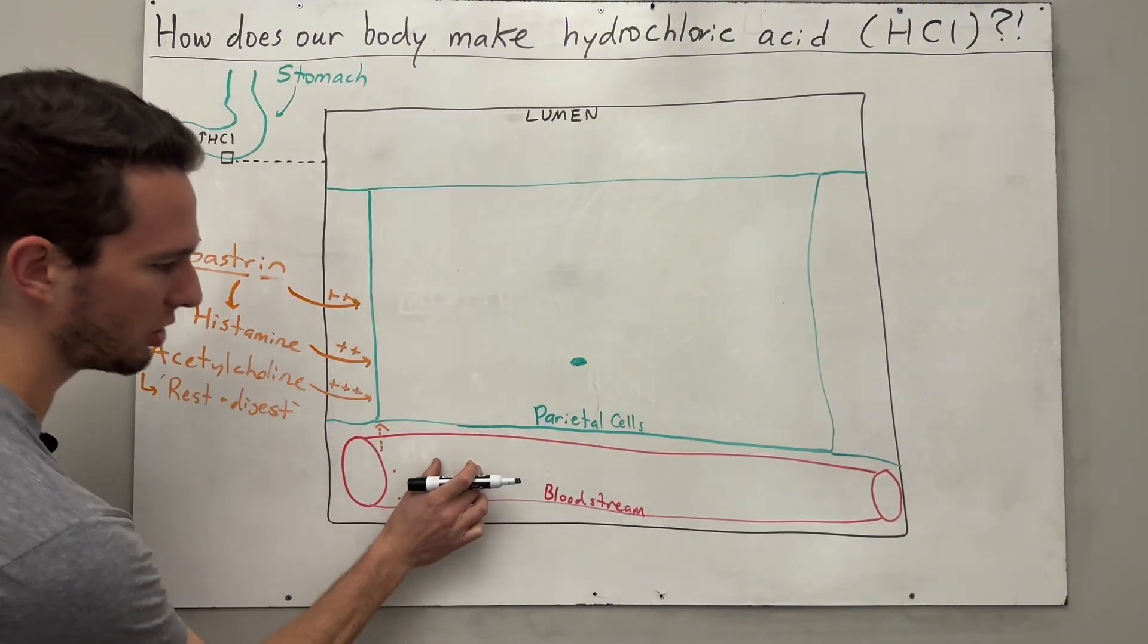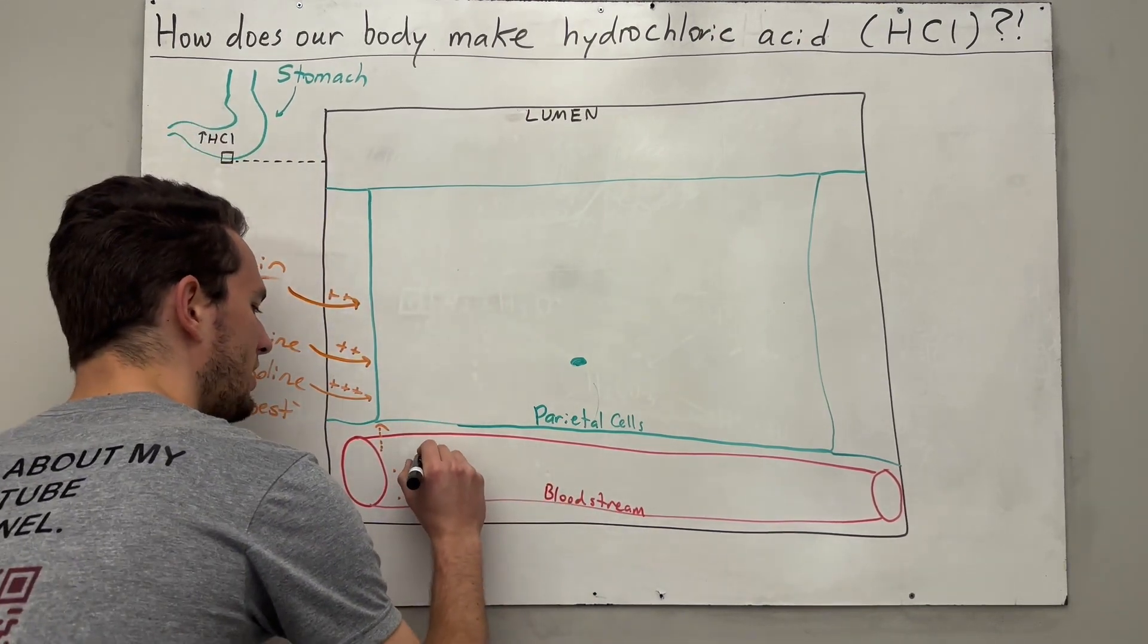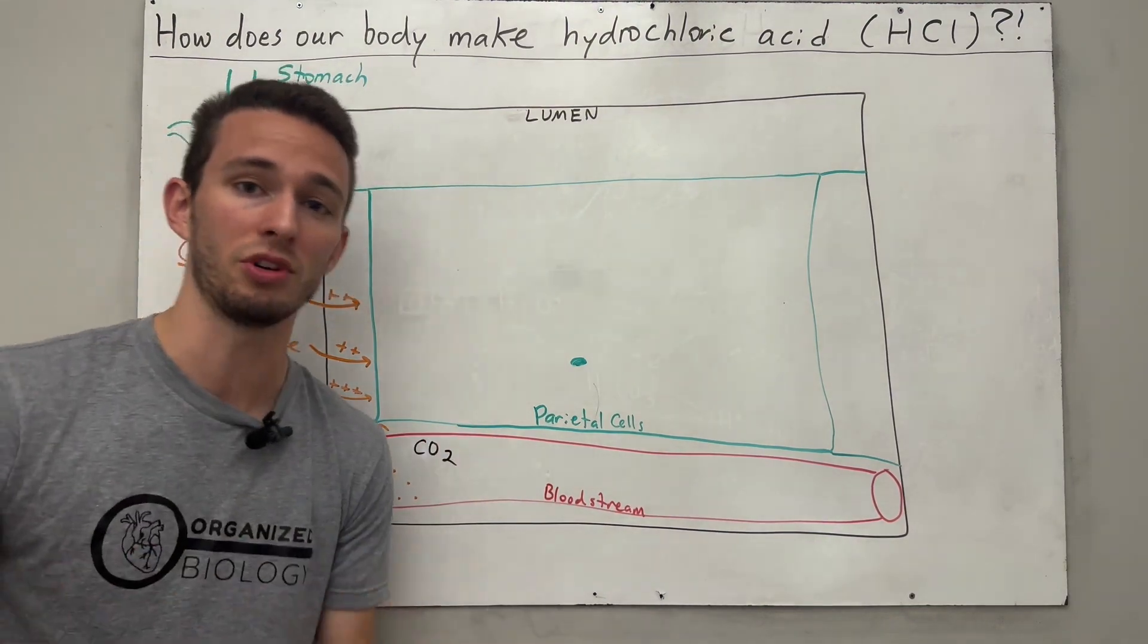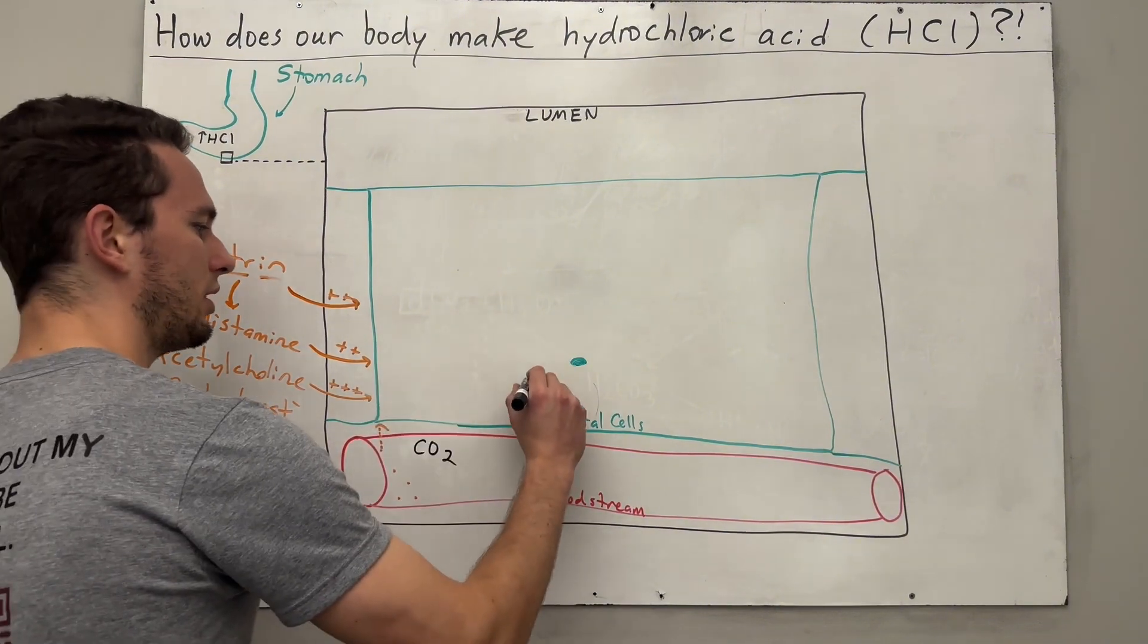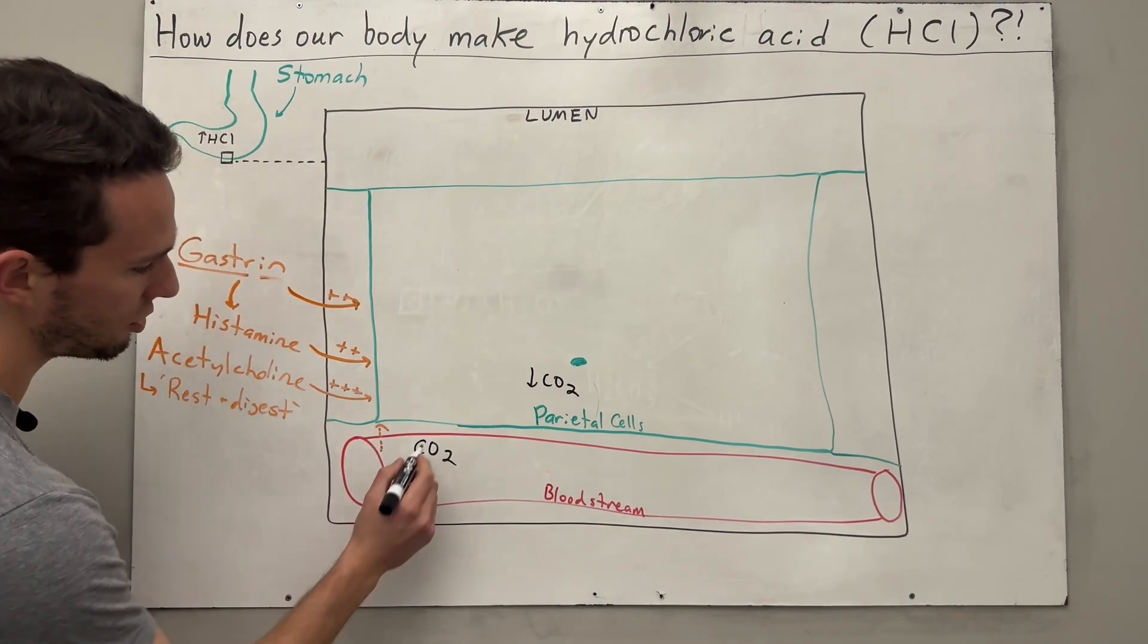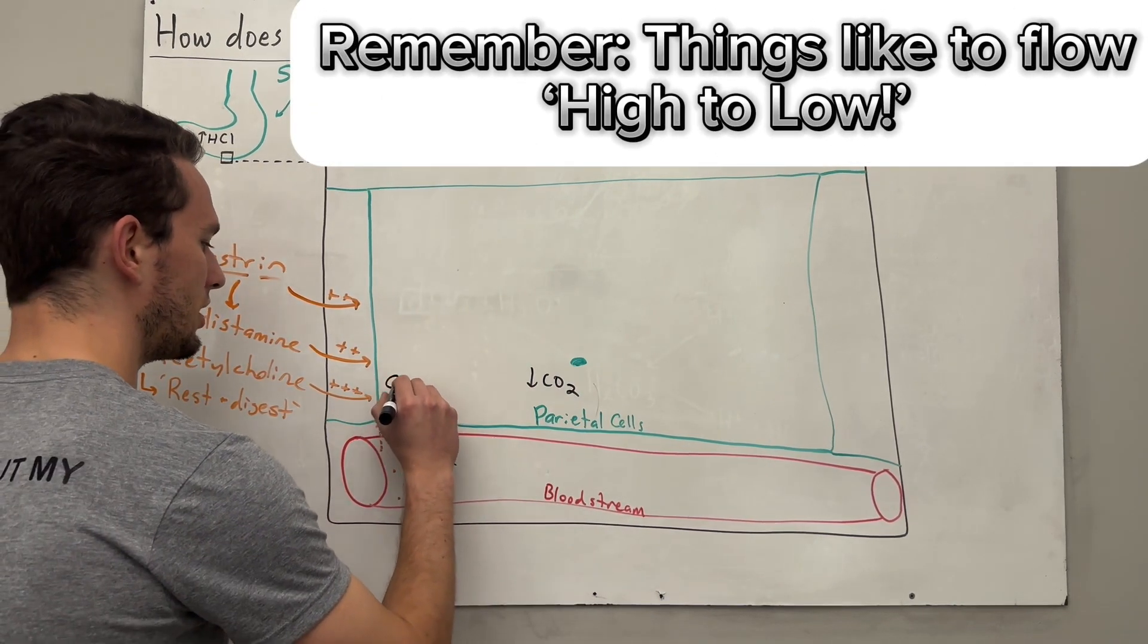Well step one, we have to look inside of the bloodstream. At this point in the bloodstream, there is a decent amount of what's called carbon dioxide in the bloodstream. And this is produced in response to basically normal cell activity throughout the body. Now compared to the parietal cells, the parietal cells will actually be relatively low in carbon dioxide for reasons I'll explain later. So this CO2 is actually going to diffuse across the membrane and fly into the parietal cell.